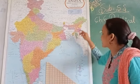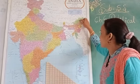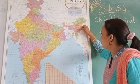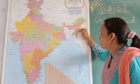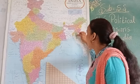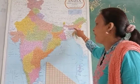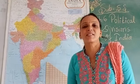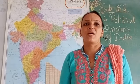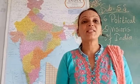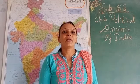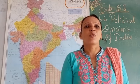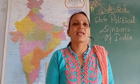So, the Seven Sisters are: Arunachal Pradesh, Assam, Nagaland, Manipur, Mizoram, Tripura, and Meghalaya. These are the seven sisters. The first one is Arunachal Pradesh. Its capital is Itanagar. This state shares boundaries with China.